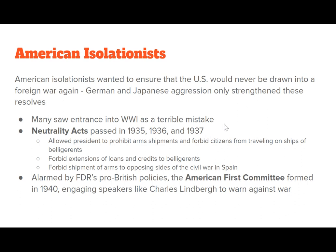Americans were intent on remaining isolationist, wanting to ensure the U.S. would never be drawn into a foreign war again like World War I. German and Japanese aggression actually strengthened these isolationist resolves rather than weakening them. Many saw entrance into World War I as a terrible mistake. A series of Neutrality Acts passed in 1935, 1936, and 1937 allowed the president to prohibit arms shipments, forbid citizens from traveling on ships of belligerents, forbid loans and credits to belligerent countries, and forbid arms shipments to opposing sides of the civil war in Spain. The America First Committee formed in 1940 and engaged speakers like Charles Lindbergh to warn against war.